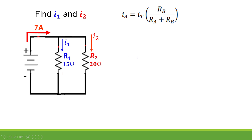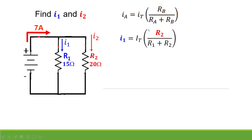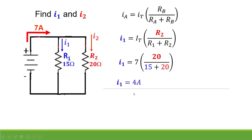Let's have a sample problem. Assuming we have a total current of 7 amperes entering a node, we are asked to find I₁ and I₂, where I₁ is the current flowing in R₁ and I₂ is the current flowing in R₂. Using the current divider rule, to get I₁, you multiply the entering current I_T by the opposite resistance — not R₁, but the opposite resistance — divided by the total resistance of the network. Substituting values: 7 multiplied by 20 divided by (15 plus 20) gives 4 amperes.